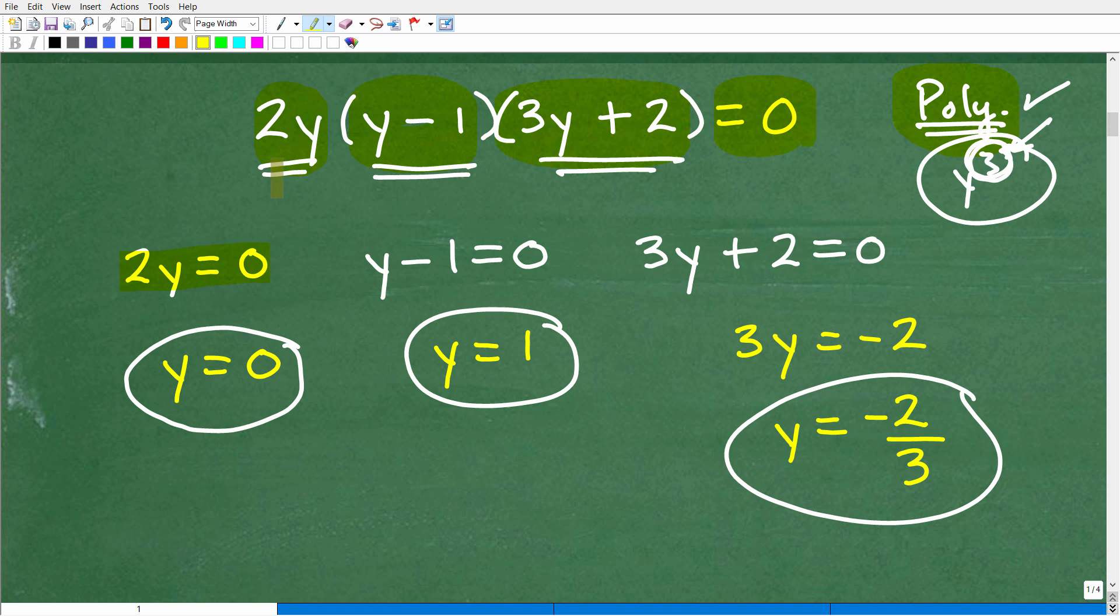All right, so here we have 2y is equal to zero, I have y minus one is equal to zero, and here I have 3y plus two is equal to zero. And then I just solve for the respective variables. So here I divide both sides of the equation by two, y is equal to zero. Here I'm just going to put one on the other side of the equation, that's y is equal to one. And then you can see the steps here to solve for y, y is equal to negative two-thirds.